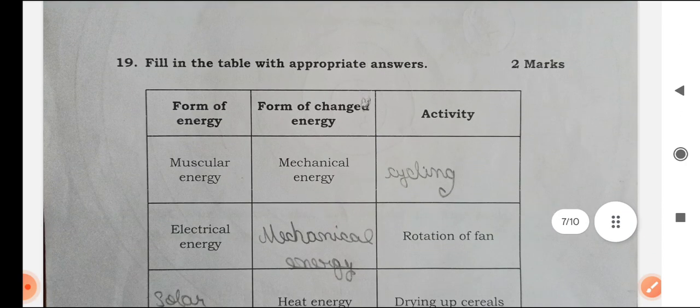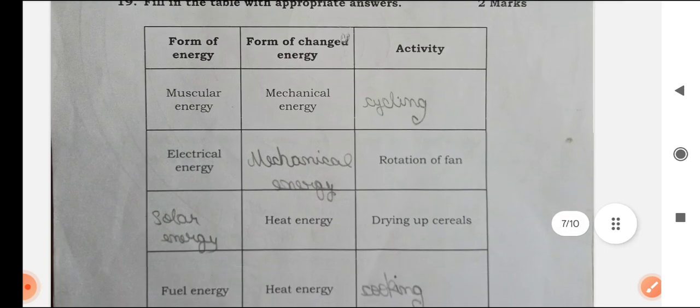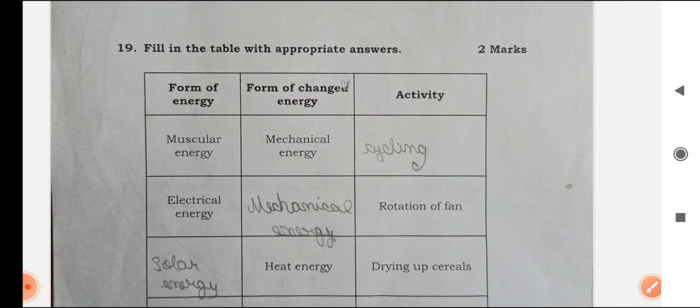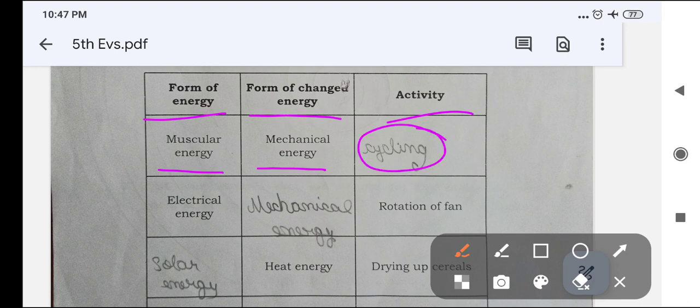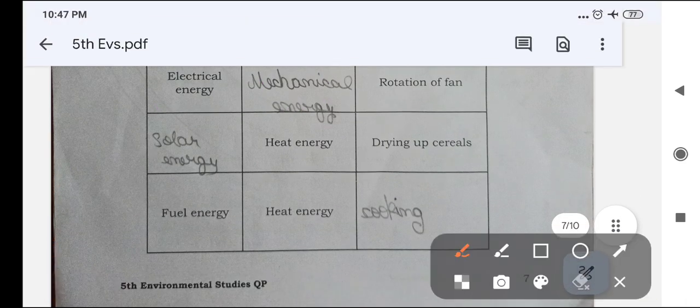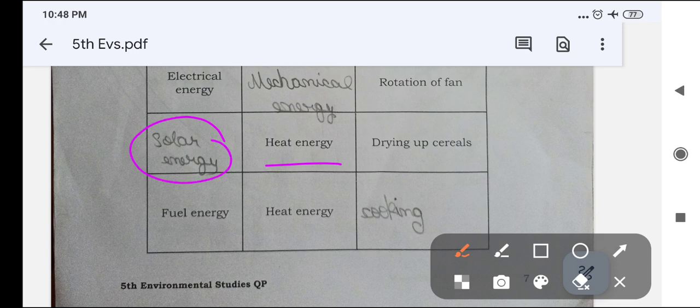Fill in the table with appropriate answer. Form of energy, form of changed energy and activity. Muscular energy, mechanical energy, activity is cycling. Electrical energy changes to mechanical energy and activity is rotation of fan. Heat energy, it is solar energy, changed to heat energy and activity is drying up cereals. Fuel energy changes to heat energy and activity is cooking.